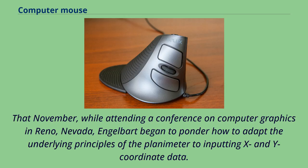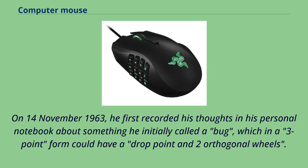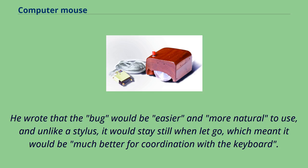That November, while attending a conference on computer graphics in Reno, Nevada, Engelbart began to ponder how to adapt the principles of the planimeter to inputting X and Y coordinate data. On November 14, 1963, he first recorded his thoughts in his personal notebook about something he initially called a bug, which in a three-point form could have a drop point and two orthogonal wheels. He wrote that the bug would be easier and more natural to use, and unlike a stylus, it would stay still when let go, making it much better for coordination with the keyboard.